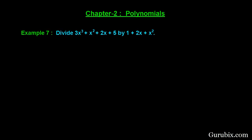Welcome friends. Here is example number 7 of chapter 2 of class 10. We have to divide a cubic polynomial by a quadratic polynomial. The cubic polynomial is 3x³ + x² + 2x + 5, and the divisor is a quadratic polynomial that is 1 + 2x + x². This is a very interesting example.